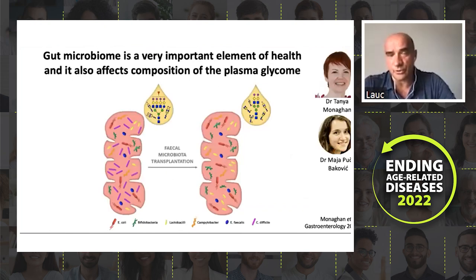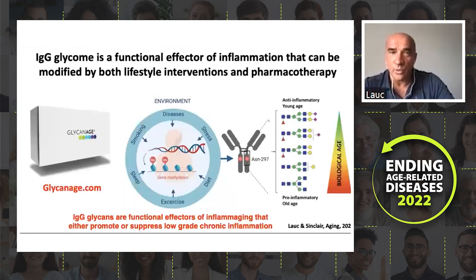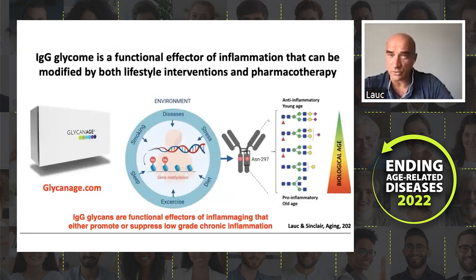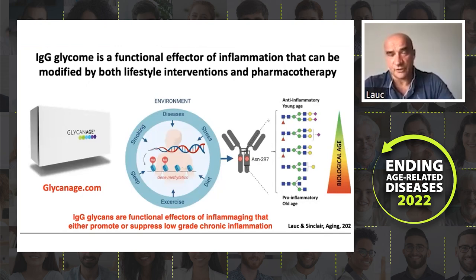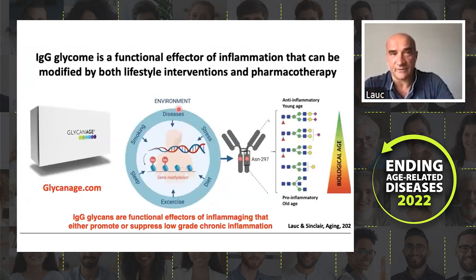Microbiome is extremely important — we have a couple of papers showing that improving your microbiome is also improving your glycome. To bring the story together: we have a test measuring 24 glycans attached to IgG, for which we know they are functional factors of inflammation. If your glycan age improves, this means your pro-inflammatory capacity of IgG is decreasing and you are less inflammatory. And we know this is affected by many different factors.